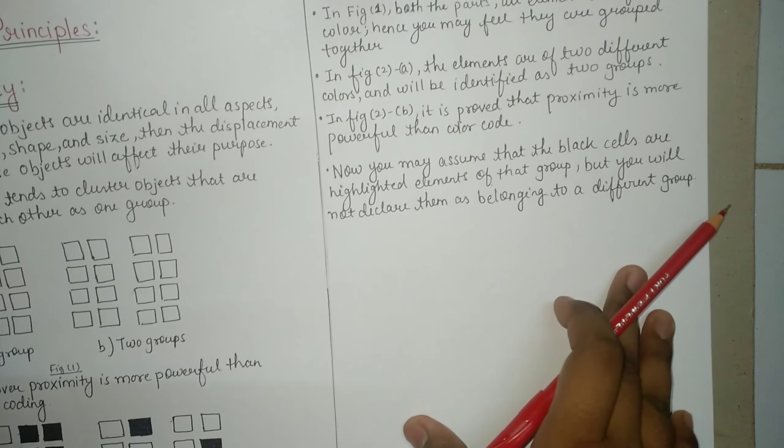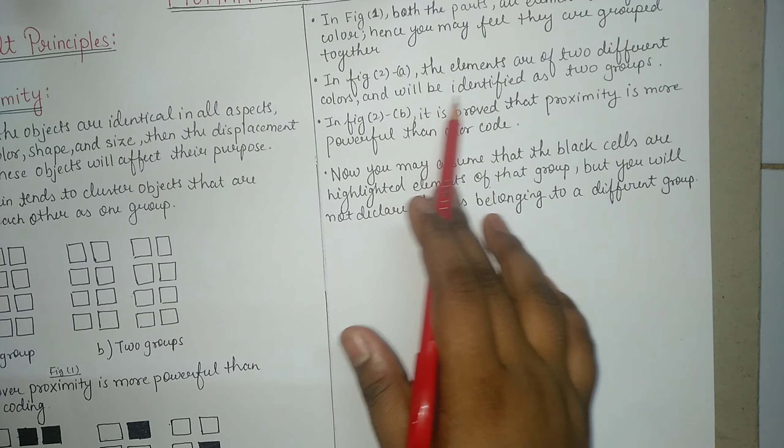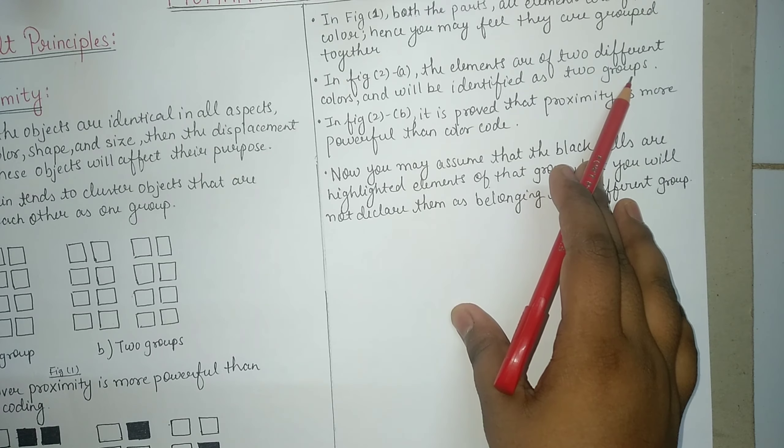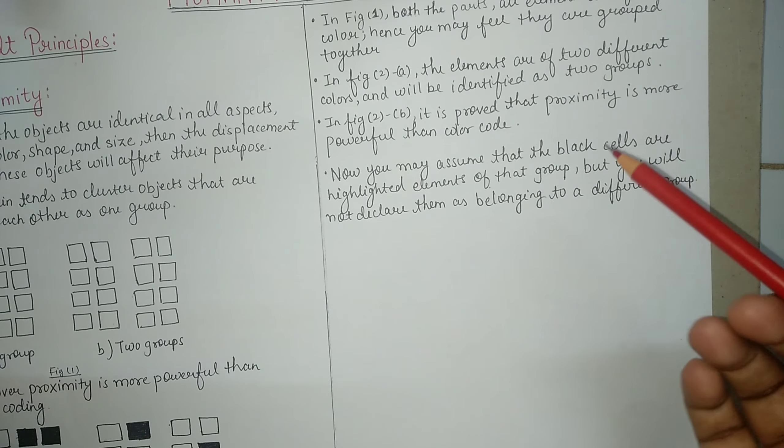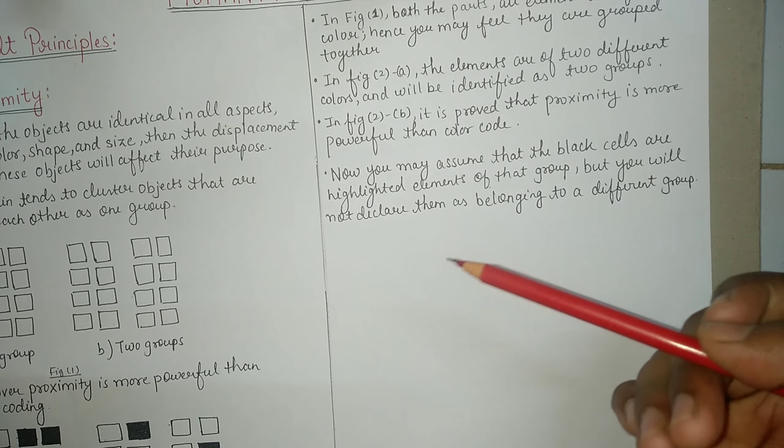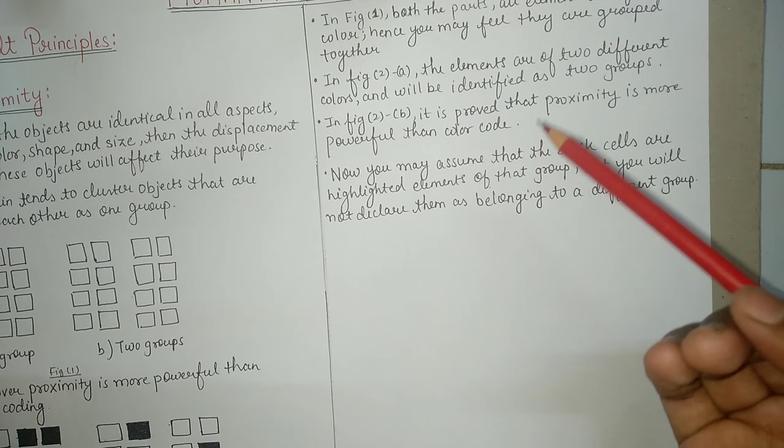In figure 2a, the elements are of two different colors and will be identified as two groups. Correct, so there are two different colors. When I said that if color, shape and size are all the same, then we can consider single group. If everything is different, I mean color is different, if there is one aspect different, then obviously that will be the different group.